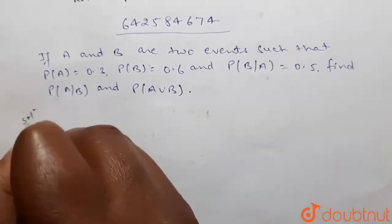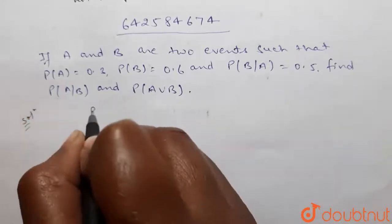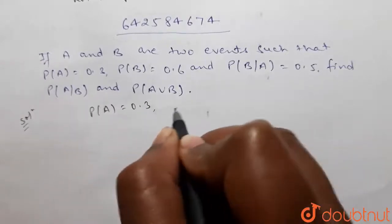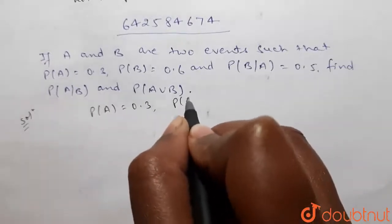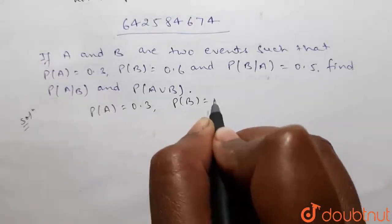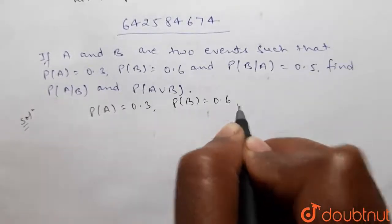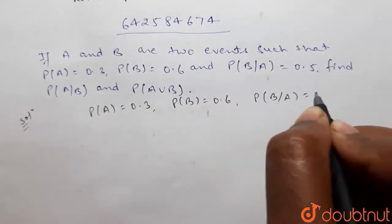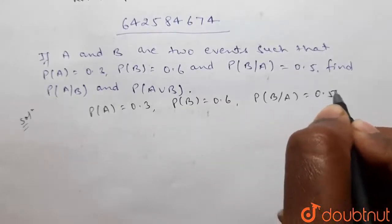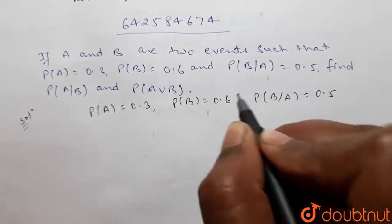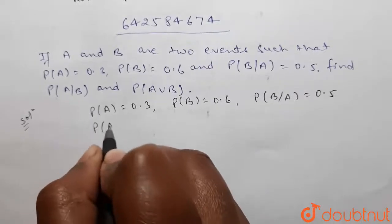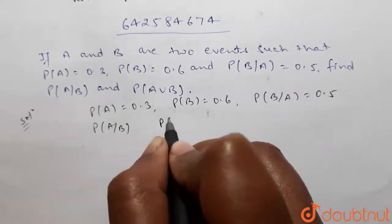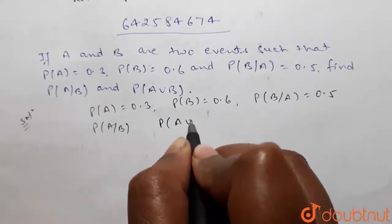In this question, probability of A is given as 0.3, probability of B is equal to 0.6, and probability of B given A equals 0.5. We have to find probability of A given B and probability of A union B.